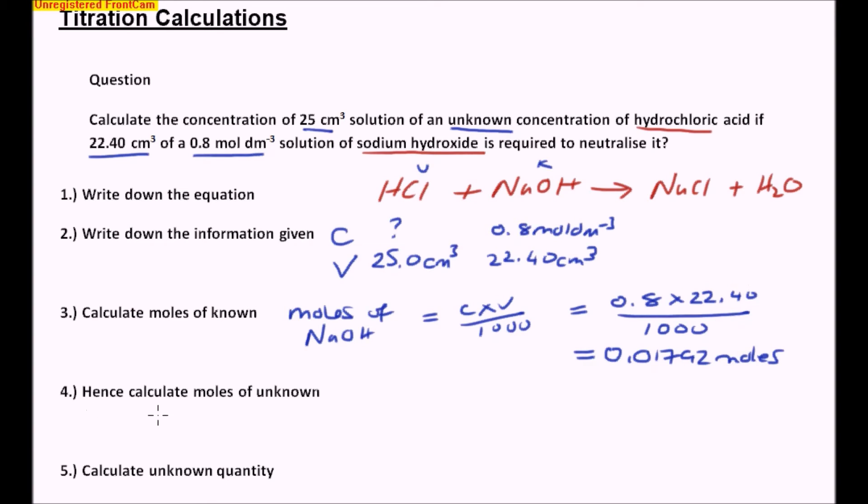Okay, so I now know that I've got 0.01792 moles of sodium hydroxide. It's a one-to-one ratio with my HCl. So HCl to sodium hydroxide is a one-to-one. Therefore, the number of moles of HCl that I'm going to have is also going to be equal to 0.01792 moles.